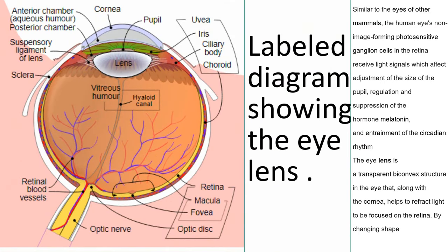The eye lens is a transparent biconvex structure in the eye that along with the cornea, helps to refract light to be focused on the retina by changing shape.